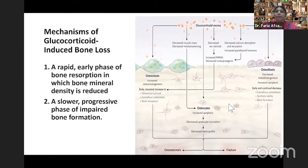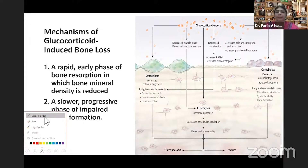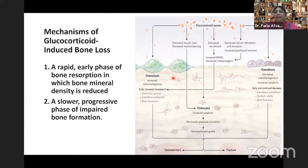Looking briefly at the mechanism of glucocorticoid-induced bone loss, there is a rapid early phase of bone resorption which decreases bone mineral density, and a slower progressive phase of impaired bone formation. Glucocorticoid excess has three effects: on osteoclasts, it causes an early transient increase in osteoclastic activity, causing increased osteoclast survival and increased bone resorption.